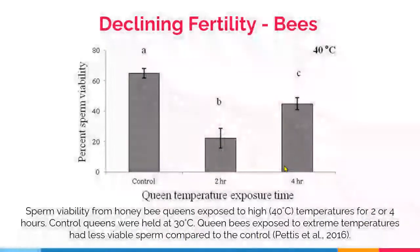Climate change is also driving population declines by affecting fertility and reproductive success. Fertility rate, sperm count, gamete number and viability, fertilization success, and sperm form, function, and concentration can all be affected by rising temperatures. One example of an affected species is bees. Here we see declining fertility in the form of reduced sperm viability in queen bees exposed to abnormally high temperatures.